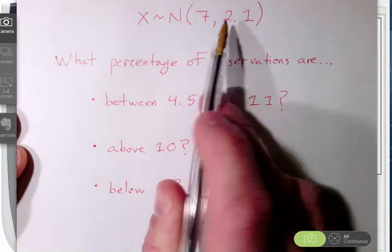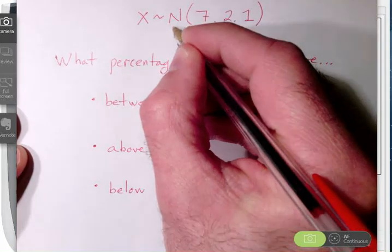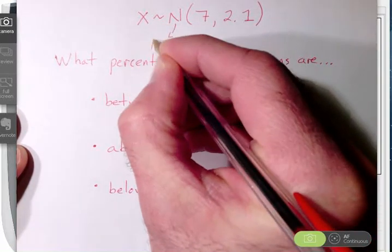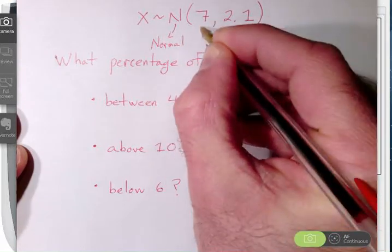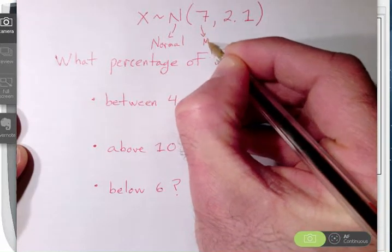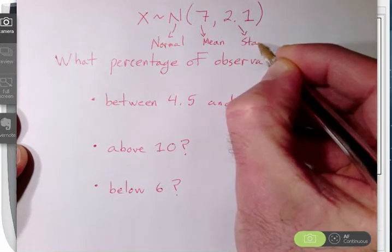So notice we have the shape, we have the center, and we have the spread. The shape is normal. Here is the mean, that's the center, and here is the standard deviation, the spread.